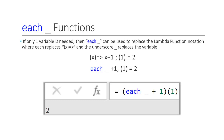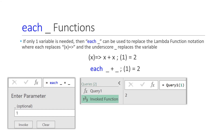If only one variable is needed in a custom function, then we can replace the lambda notation with the each underscore notation. When doing that, the keyword each takes the place of the x and the lambda operator, and the underscore takes the place of the variable x in the mathematical formula. In this example, we used each underscore plus 1 to evaluate the function in the place of x plus 1. Here is another example where instead of having a formula with x plus x, we use underscore plus underscore.